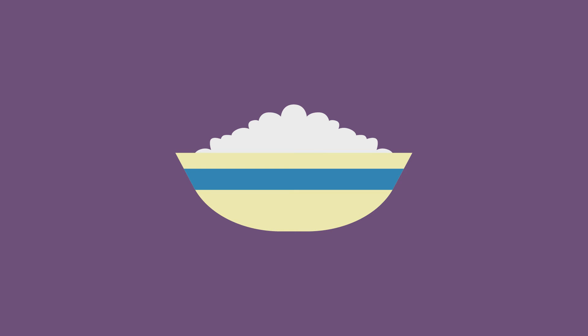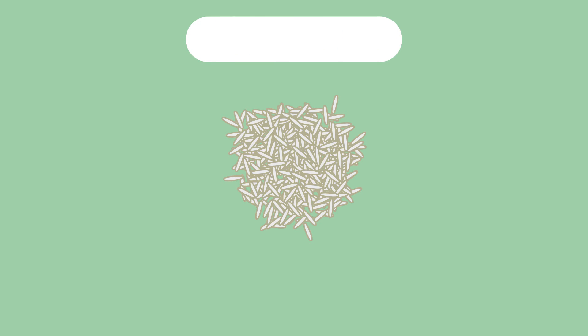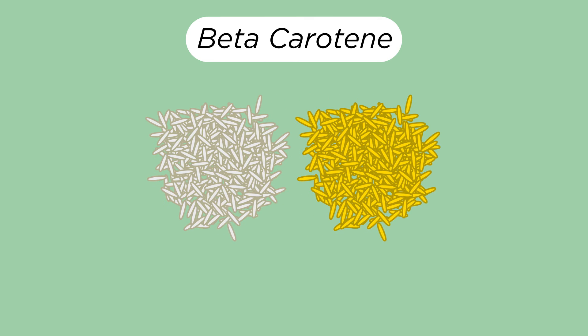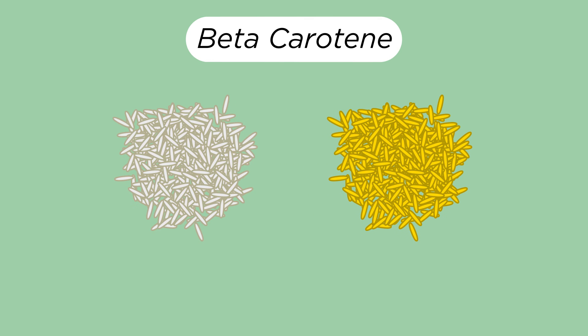To overcome this vitamin A deficiency, rice has been genetically modified to contain beta-carotene, which is used in the body to make vitamin A. This gives the rice a yellow color, so it's known as golden rice. Its taste is not altered, but it contains extra nutritional benefits.